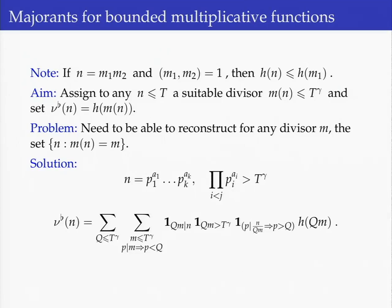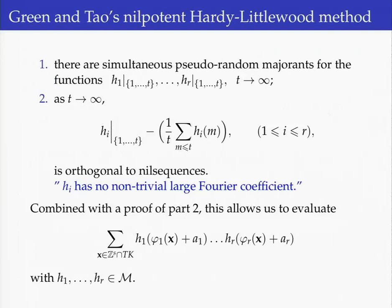So these are the ideas for the first part of this program. Combined with a proof of the second part — orthogonality to nilsequences — one arrives at being able to asymptotically evaluate these linear correlations for multiplicative functions from class M. I will stop here. Thank you.